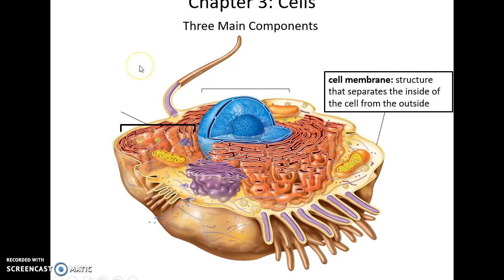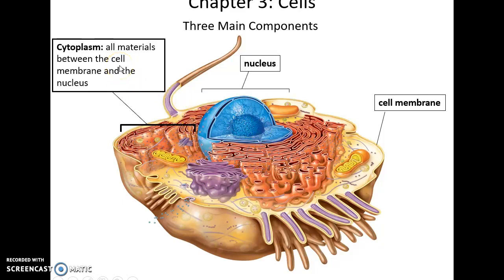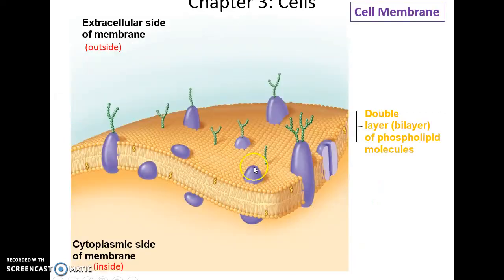The cell has three main components. It has the cell membrane, the structure that separates the cell's insides from the outside world. It has the nucleus, the structure that houses the genetic material, the DNA, and the cytoplasm, which is everything between the nucleus and the cell membrane.